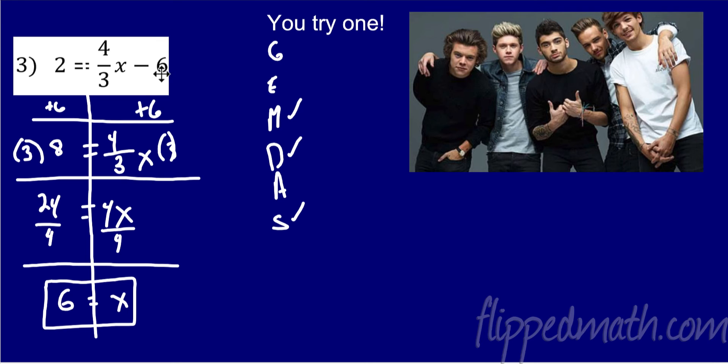So as you can see here, we had subtract 6, we had multiply by 4, we had divide by 3. I added 6 to both sides. I multiplied by 3 to cancel out the 3, and I got 4X. And I divided both sides by 4. 24 divided by 4 is 6.